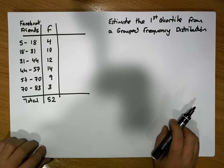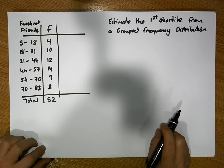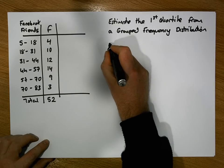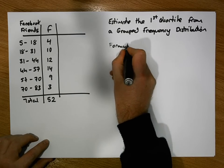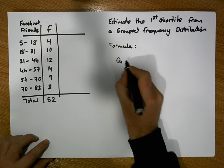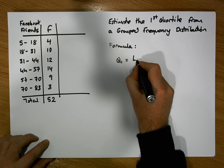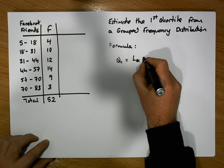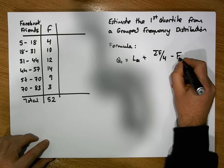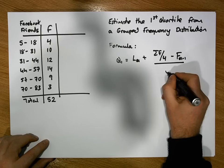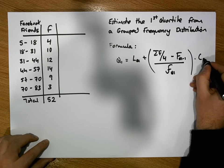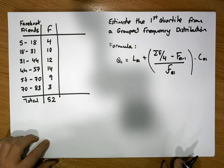The first thing is that we have a formula to guide us in the calculation of the first quartile. The formula says that the first quartile, symbolised as Q subscript 1, is equal to L of Q₁ plus (σf/4 minus capital F of Q₁ minus 1), all over small f of Q₁, times C subscript Q₁.